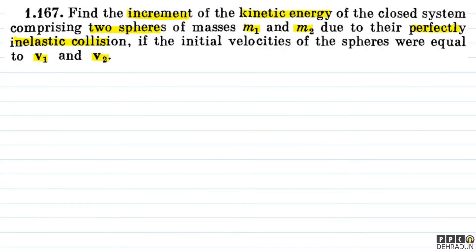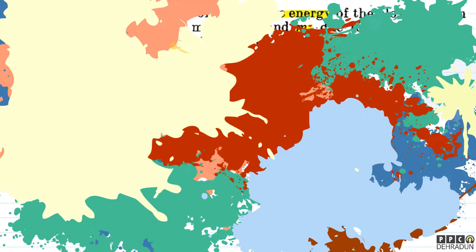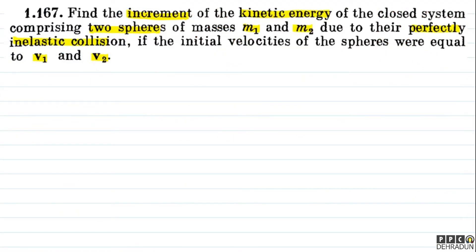So, what was the question? There are two spheres with masses M1 and M2 undergoing perfectly inelastic collision. The initial velocities are V1 vector and V2 vector. We have to find the increment in kinetic energy of the system after the collision.